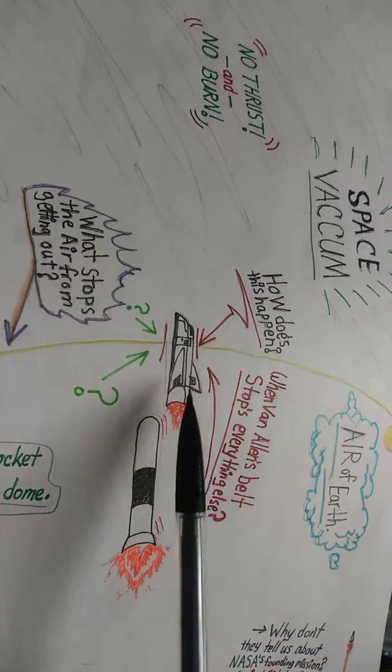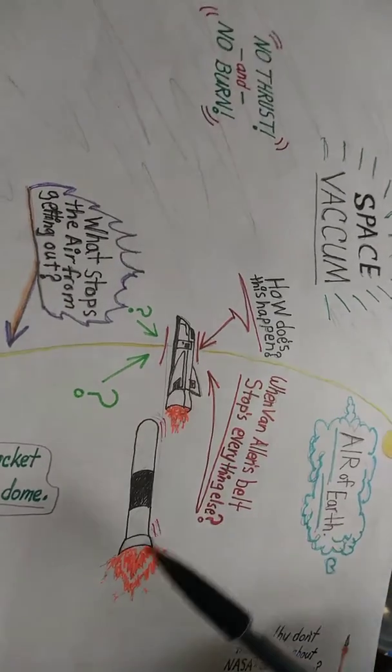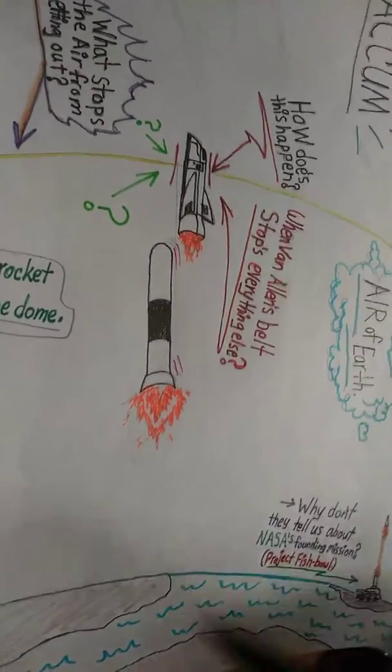But how does this happen? When the space shuttle ejects its rocket and it penetrates the thing, it's coming from Earth.